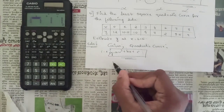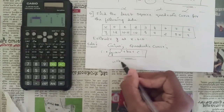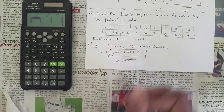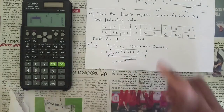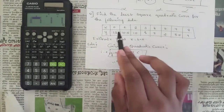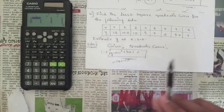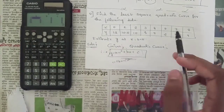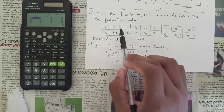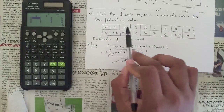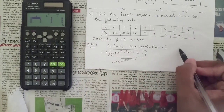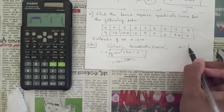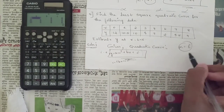The procedure remains the same. They are given a set of values for x and y. The number of observations are counted: 1, 2, 3, 4, 5, 6, 7, 8 — so we write the number of observations n = 8.